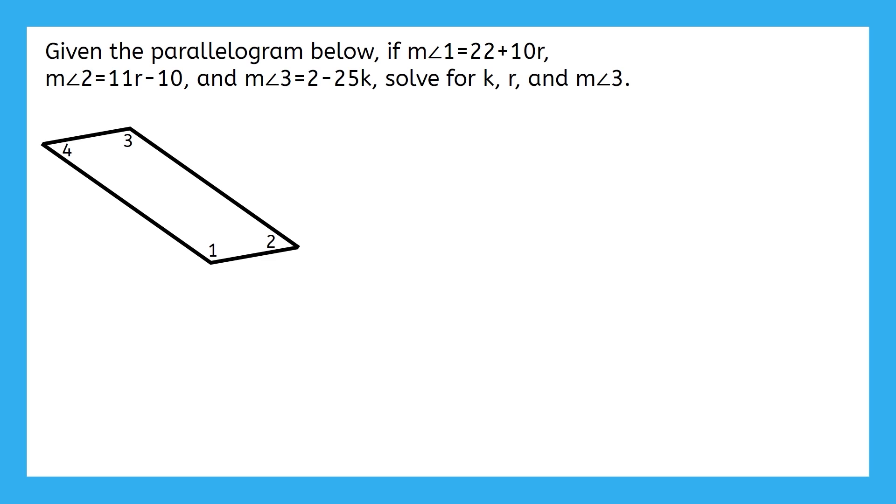There are a few different relationships that we have here. Angles 1 and 3 are opposite angles, which means that they're congruent. Angles 1 and 2 are consecutive angles, so they're supplementary. Angles 2 and 3 are also consecutive angles, so they're supplementary too. I can only solve an equation if it has one variable in it. Knowing that, which of these angle relationships will be best to start with because it only involves one variable? Angles 1 and 2 would be the best place to start since their measures both use the variable R. That will give us an equation with a relationship between the measure of angles 1 and 2. Pause the video here to set up the equation between angles 1 and 2 and solve for R.